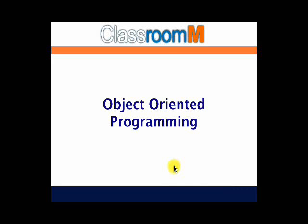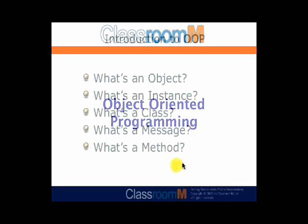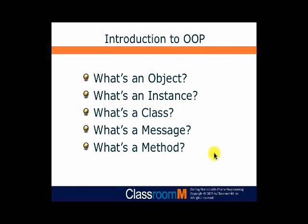Let's now talk about object-oriented programming, OOP. OOP, or object-oriented programming, is really a discipline for writing programs, and it differs from the discipline of what's called a procedural language. So you have this thing called an object-oriented programming language, an OOP language, and a procedural language. C is a procedural language and Objective-C is not, which is kind of interesting, and I'll talk about that when I give you an overview of Objective-C in a few minutes.